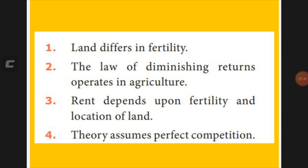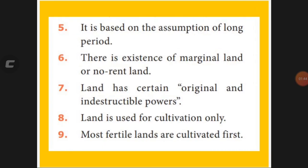Next assumption is that perfect competition should exist when applying this theory. There is also the existence of marginal land and no-rent land — land far away from the river has less fertility, so expenses equal yield and there is no profit. That land is called no-rent land. Land has certain original and indestructible power, meaning naturally the land has some power that cannot be destroyed. This theory is applicable only for cultivated land.